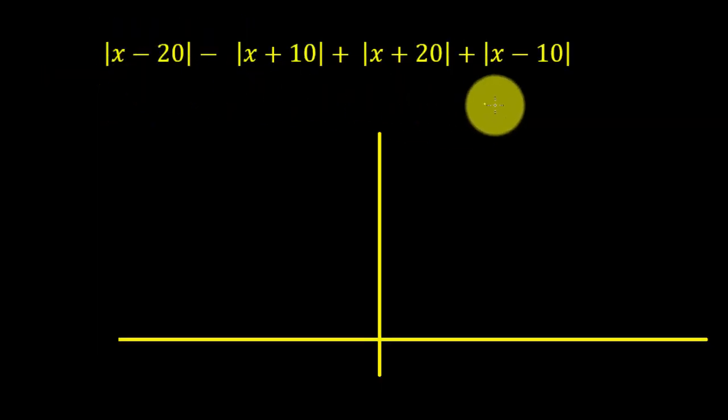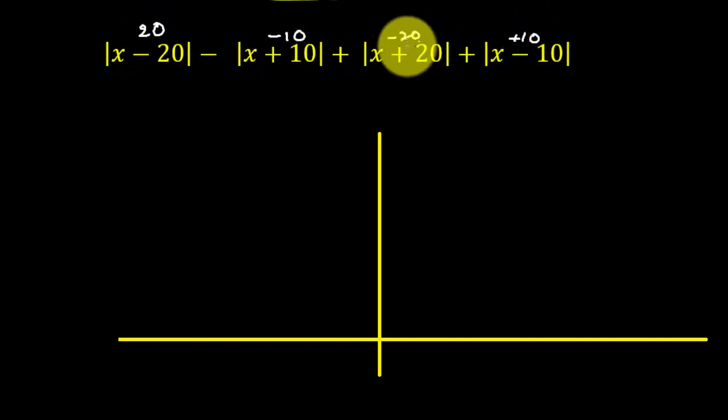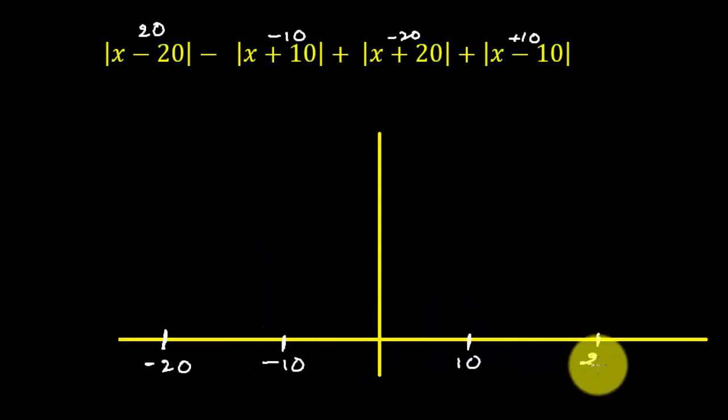Here we have a mod function. First we find the values, the corresponding roots are 20, minus 10, minus 20, and plus 10. So the minimum is minus 20. Say this one is minus 20, this one is minus 10, this one is plus 10, and plus 20.